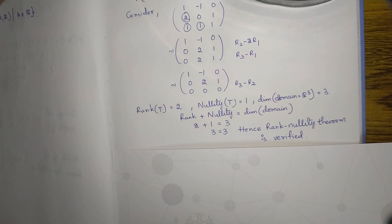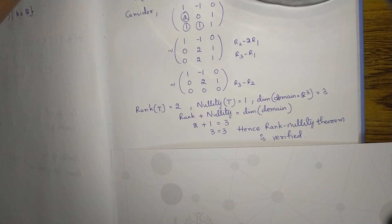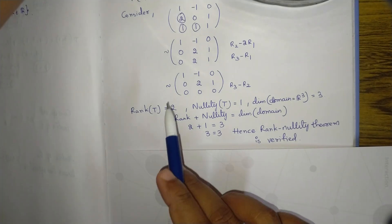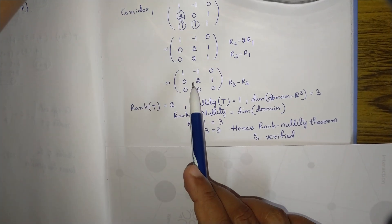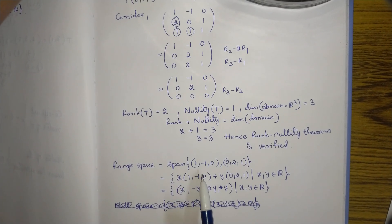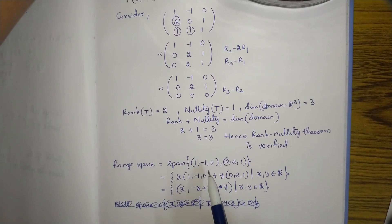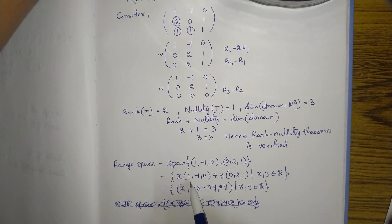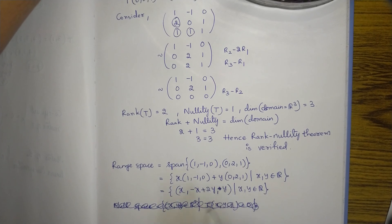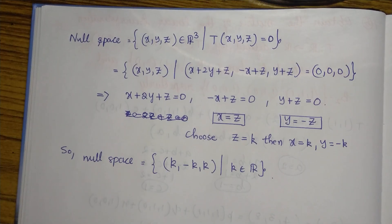Now we calculate the range space and null space from the row reduced echelon form. The range space is the span of the vectors (1, −1, 0) and (0, 2, 1). This span means the linear combination of these two vectors: x·(1, −1, 0) + y·(0, 2, 1), where x and y are real numbers. That is your range space.